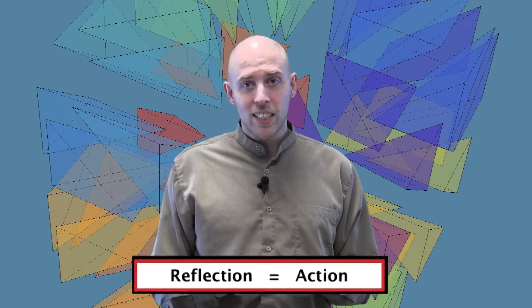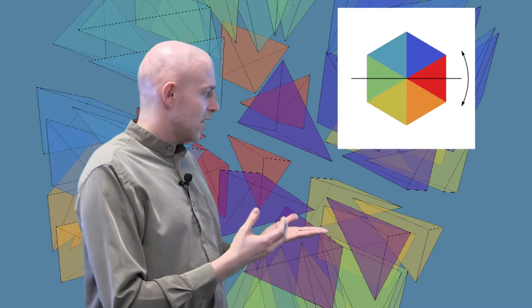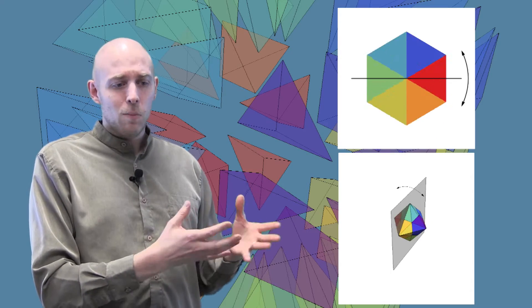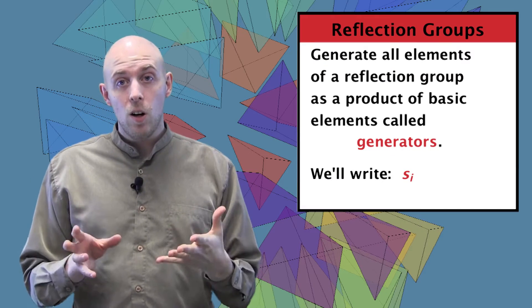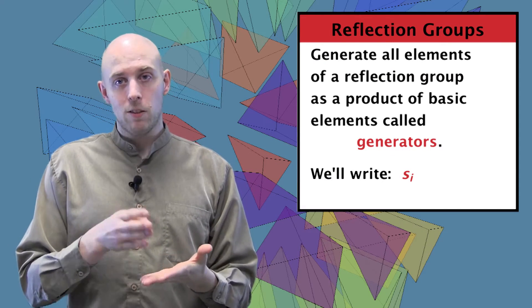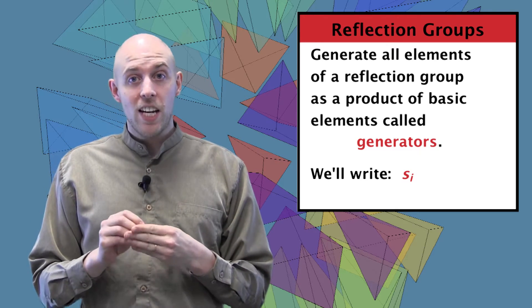We're going to think of a reflection as an action of reflecting in a mirror. So for our two-dimensional friends that is basically the same thing as a flip, but in three dimensions and higher you need to really think about that as turning everything inside out. We're going to generate all elements in a reflection group as a product of some basic reflections called generators. We'll write S sub i for the i-th generator.